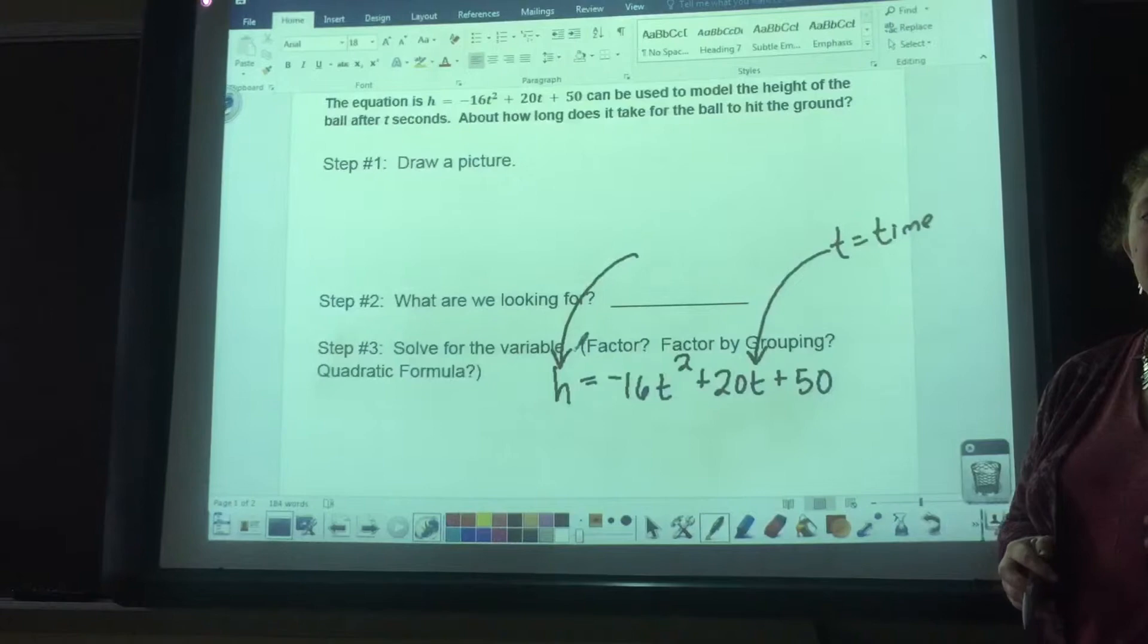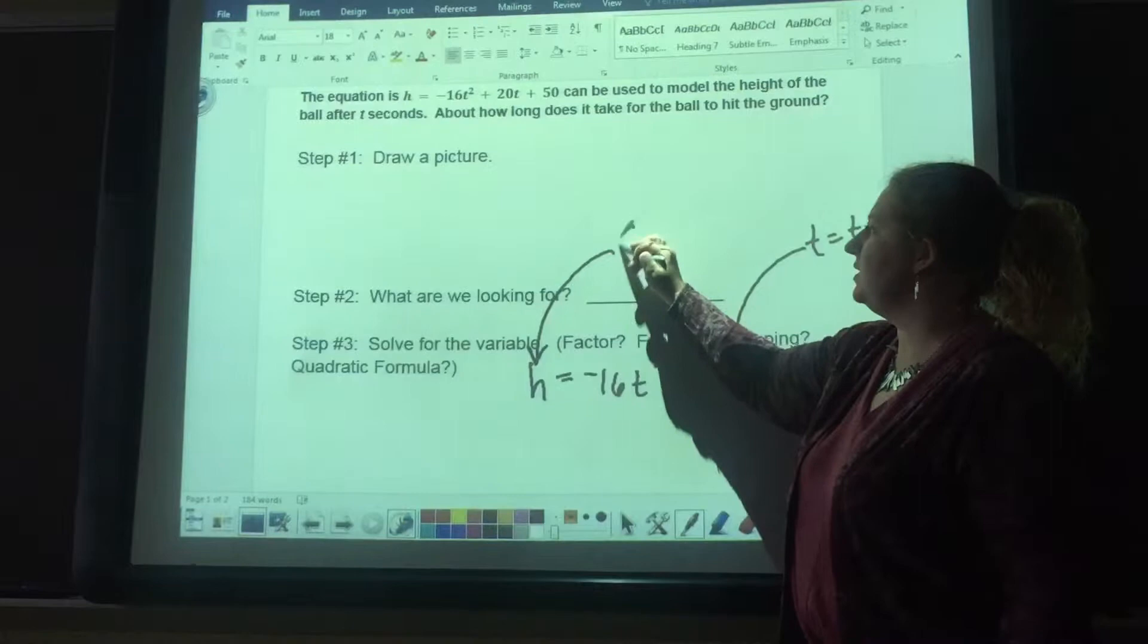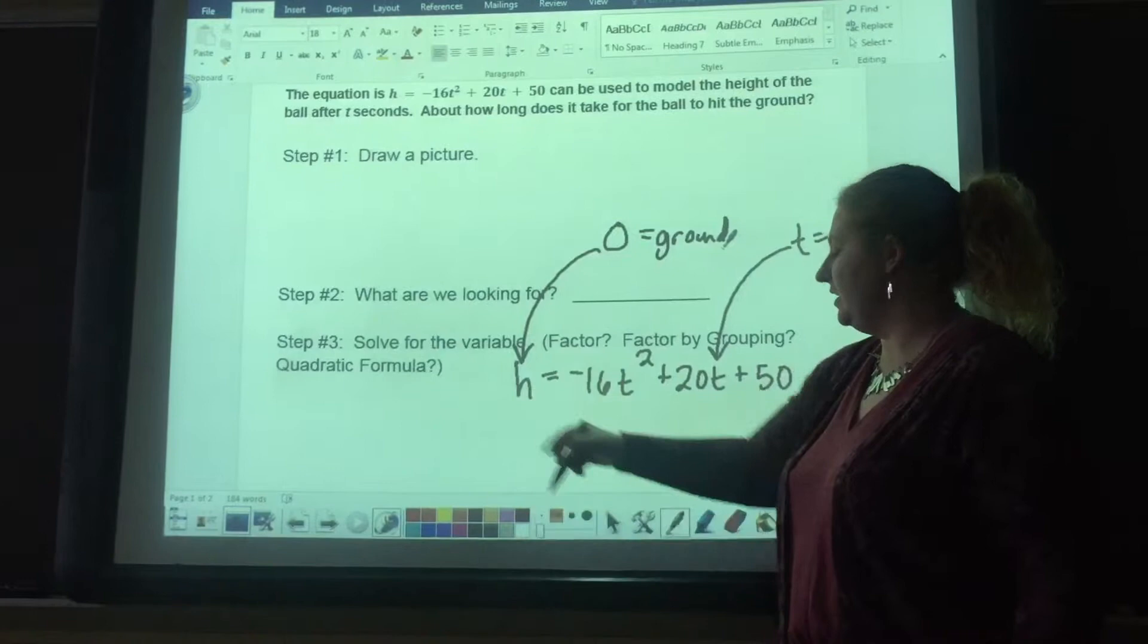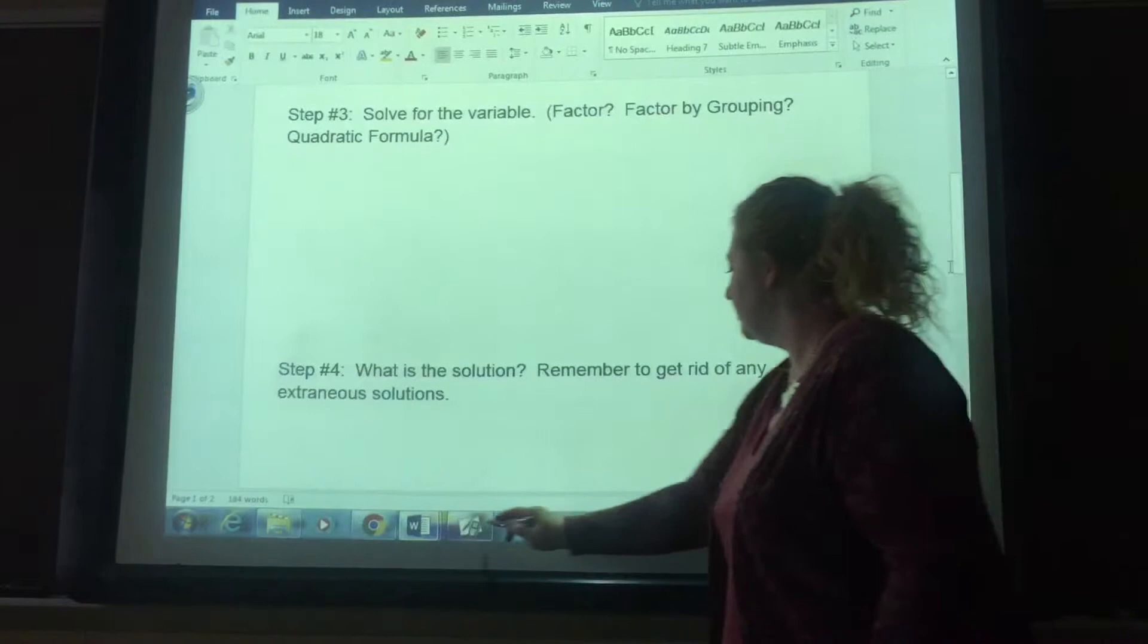Think about this. We start at 50 feet tall, and then the ball landed where? It landed on the ground, which means that the ground equals 0. So we're going to plug 0 in for h. And again, just to give me a little bit more room, I'm going to erase that and bring that up here. We are going to write the equation and set it equal to 0.